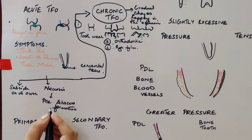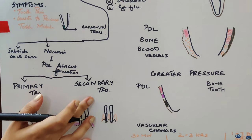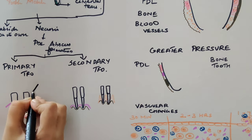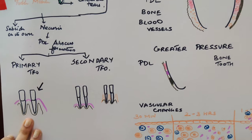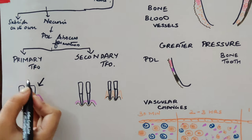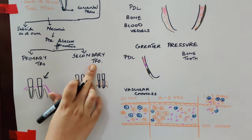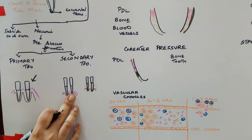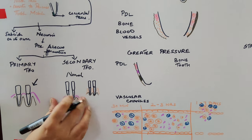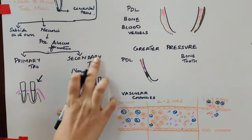Depending on the nature of the cause, TFO can also be classified as primary TFO or secondary TFO. Primary TFO occurs due to excessive occlusal forces on a normal periodontium — normal bone and normal gingiva but with excessive force. Secondary TFO occurs when there is marginal periodontitis and bone loss, and the periodontium cannot withstand normal occlusal forces.